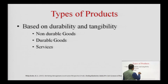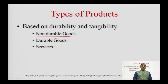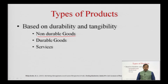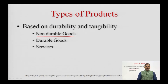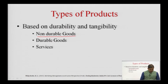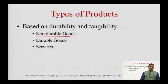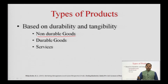Based on durability and tangibility, the first type is non-durable goods. Non-durable goods are tangible in nature — we can touch them — and they are normally consumed in one go or in a few uses. For example, a Pepsi or Coke bottle, or a milk packet that we use again and again until it is finished. They are consumed more frequently and therefore require a specific marketing strategy in terms of manufacturing, storage, distribution, and promotion.